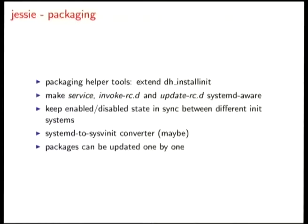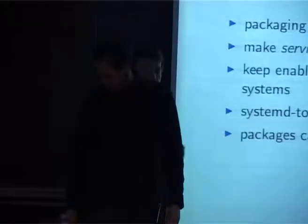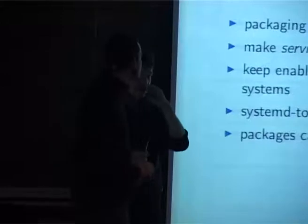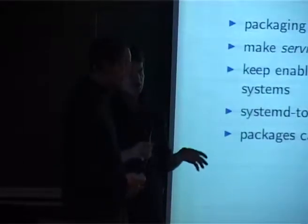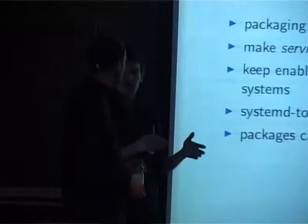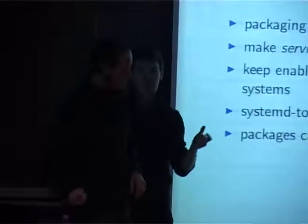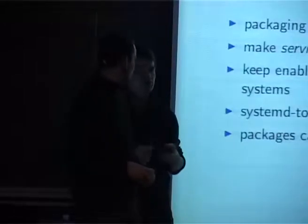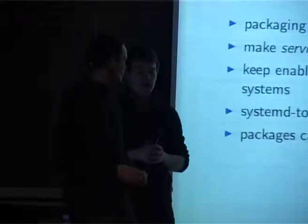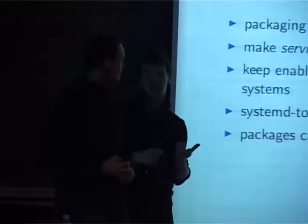That systemd-to-sysvinit converter is mainly interesting in the future. We already have sysvinit scripts written and they won't go away overnight. Supporting systemd in Debian doesn't mean we're cutting off kFreeBSD or other ports. It just means if you want to support systemd, you package those unit files. Maybe in the future when you don't want to write sysvinit scripts anymore, you use that conversion option and we can still keep support for those ports. If it's not possible, you have to write two files — but as you've seen, service files are pretty simple, so it really shouldn't be that much effort.